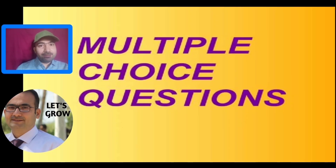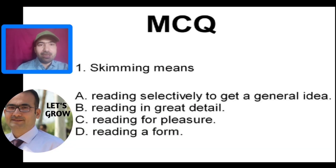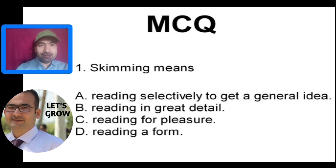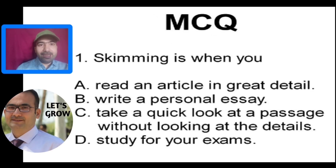Now let's look at some multiple choice questions. Question one: skimming means — A) reading selectively to get a general idea, B) reading in great detail, C) reading for pleasure, D) reading a form. The answer is option A — skimming means reading selectively to get a general idea. Question two: skimming is when you — A) read an article in great detail, B) write a personal essay, C) take a quick look at a passage without looking at the details.